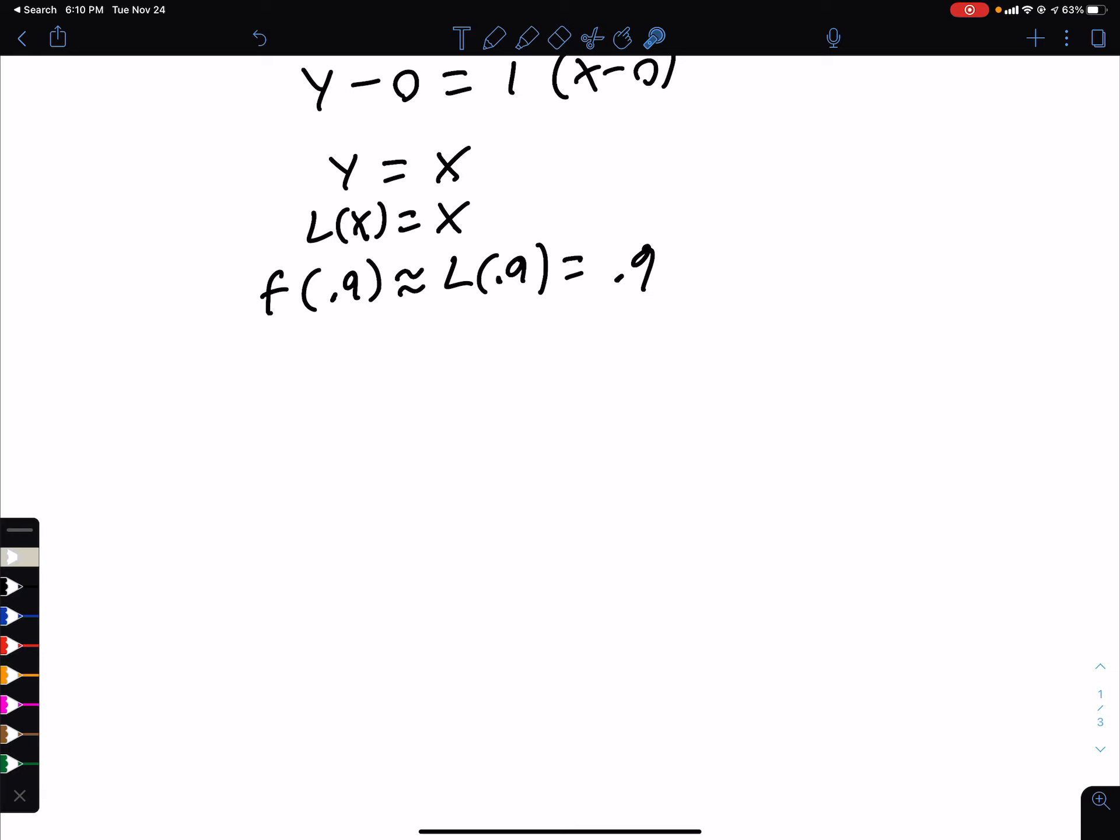So this is an approximation of f of 1.9. To find our error, or percent error, you have to find the amount of error. So it's the actual value. We have to put that in our calculator. Or I could just do ln of 1.9.